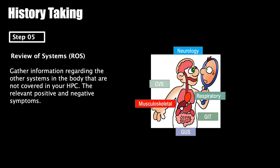After the history of presenting illness, ask about the systemic review — asking the patient about possible symptoms arising from any other system. For a patient with chest pain, you're thinking cardiovascular or respiratory, but you must also ask about other systems. One differential for chest pain is gastritis, so ask about the GI system — nausea, vomiting — and ask relevant positive and negative symptoms from other systems.